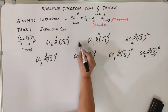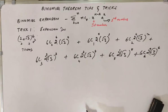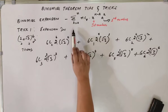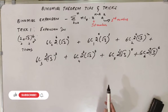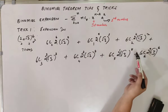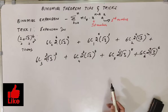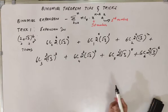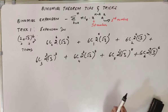Now we put plus signs in between the terms. Normally if we use the formula and keep using R equal to 0 through R equal to N, for a power of 6 it will easily take 2 to 2 and a half minutes. But if you use this method, it will just take 45 seconds or maybe even lesser. With average speed, within 45 to 50 seconds you can have the binomial expansion ready.